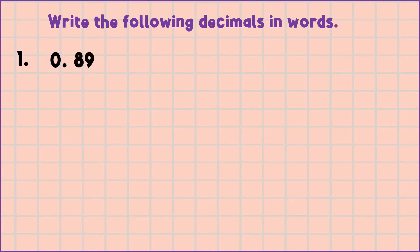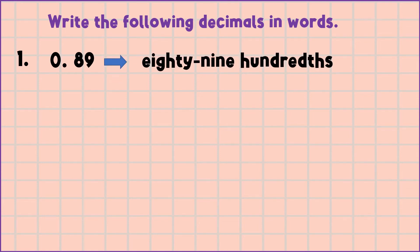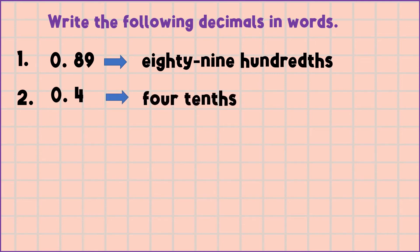Number one: how do we read this number? Yes, you are right. This is eighty-nine hundredths. Next number: how do we read this number? Yes, you are right. This is four tenths.